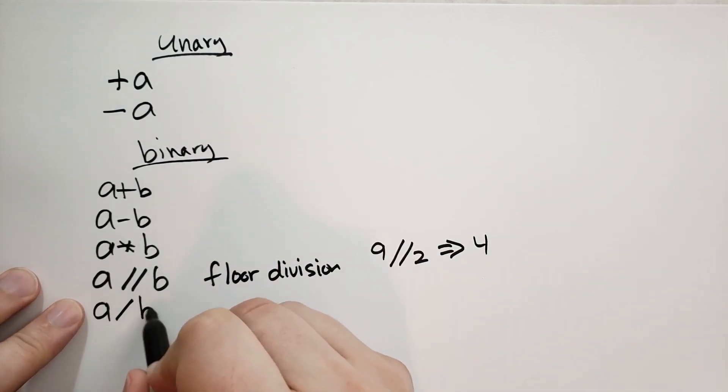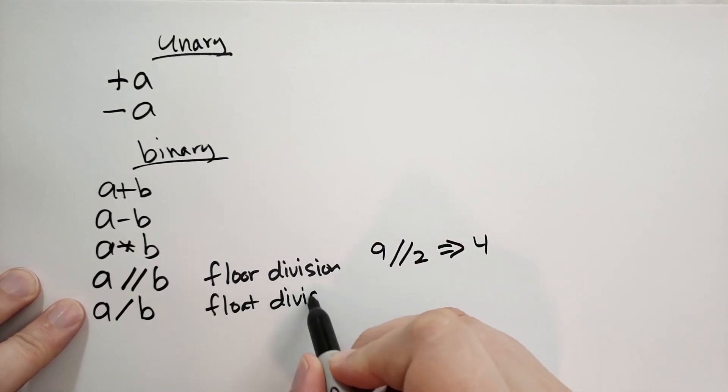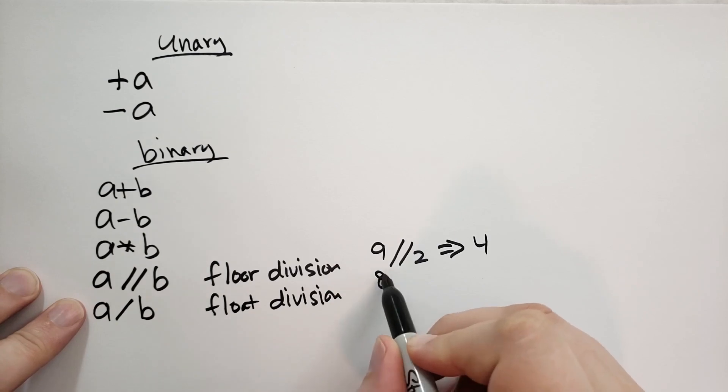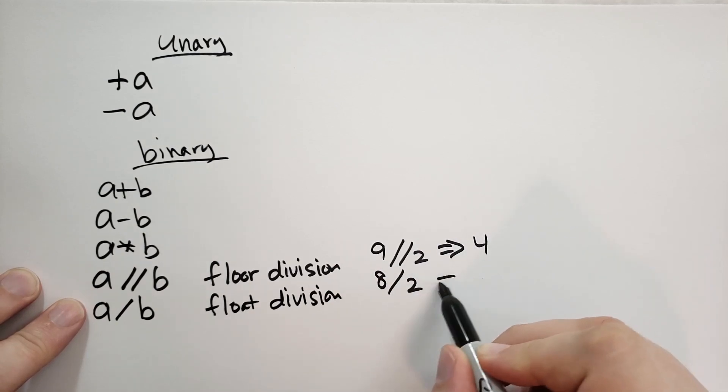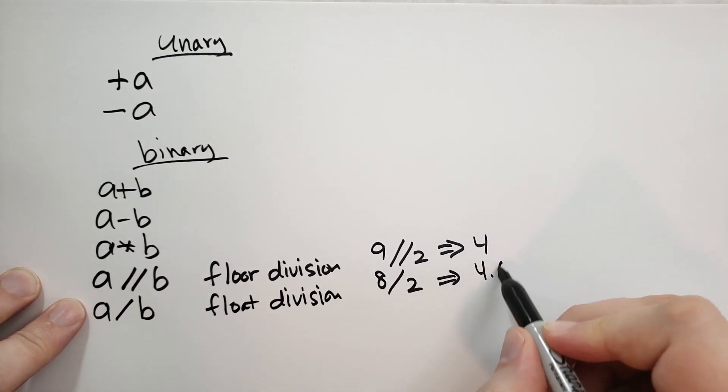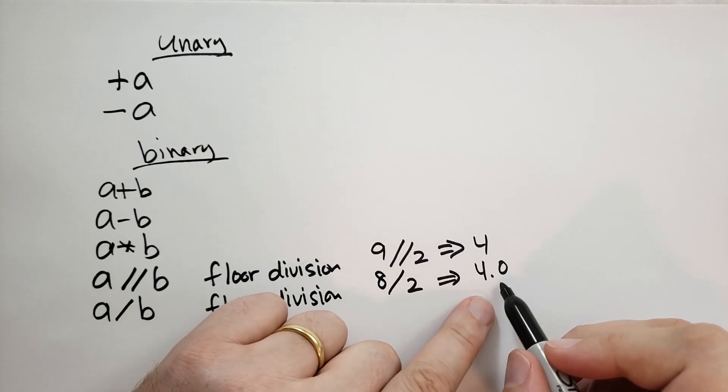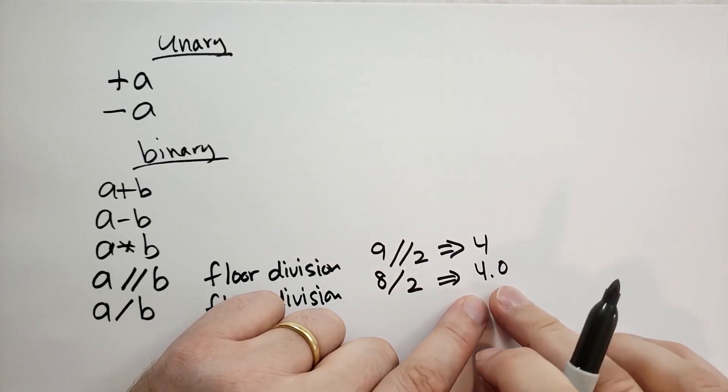And if you do a single slash, then this is called float division. So if you did eight slash two, that's going to give you four point zero, which is a float, not an integer. We'll cover floats in a minute, in another lecture.